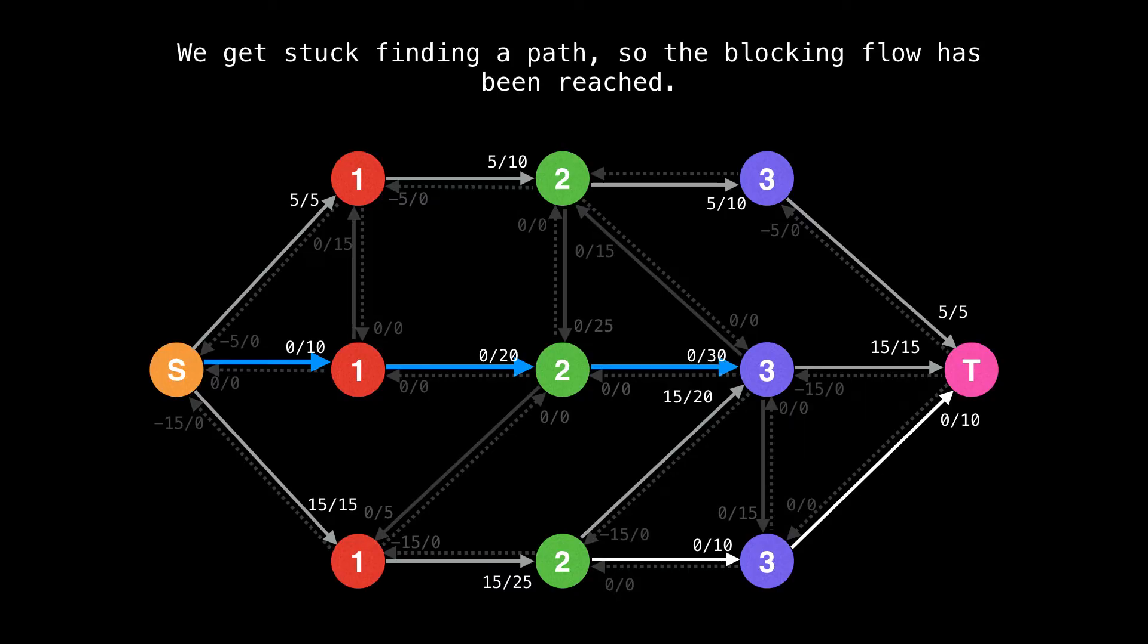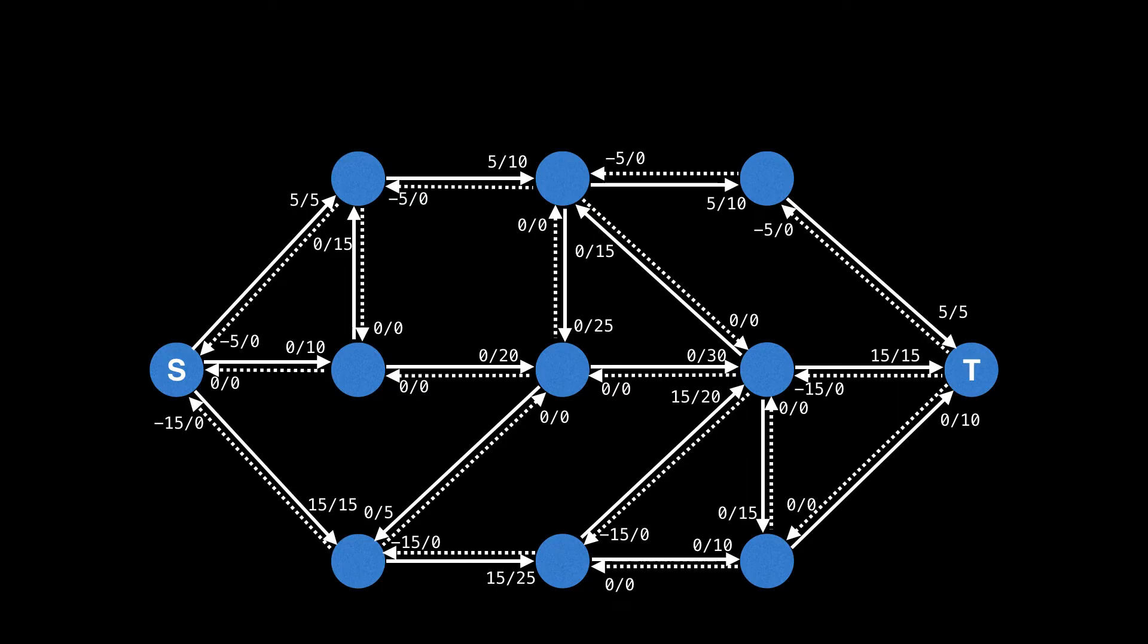What happens now is that we get stuck performing the depth first search. There are no edges in the level graph with a remaining capacity greater than zero which can lead us to the sink. So the blocking flow has been reached. We just finished the first blocking flow iteration.